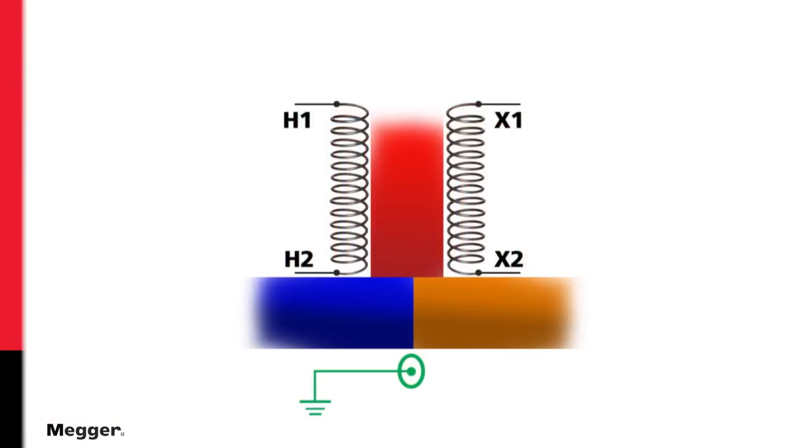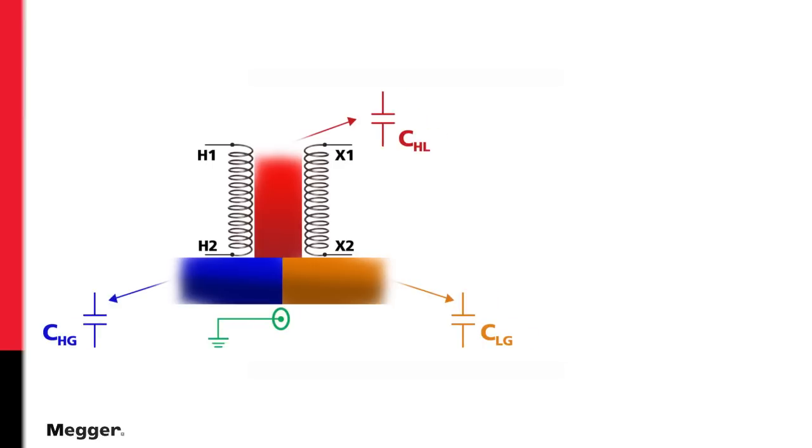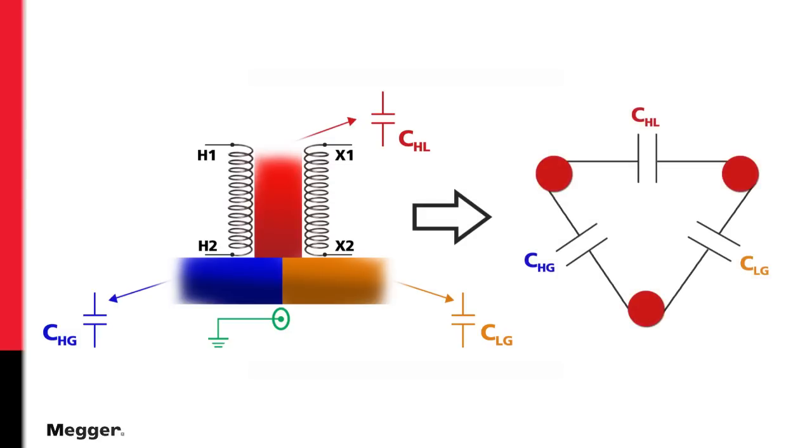For a typical two winding transformer, we are interested in three key insulation measurements: high winding to low winding, high winding to ground, low winding to ground. Some newcomers to this test assume we test between phases, but it is between windings where test is conducted, as well as winding to ground.